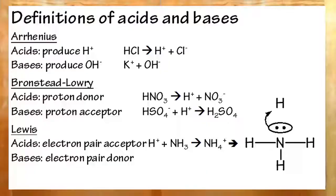To recap, Arrhenius acids produce H plus. Arrhenius bases produce OH minus. That's the earliest definition. Bronsted-Lowry acids produce H plus. Bronsted-Lowry bases take H plus.